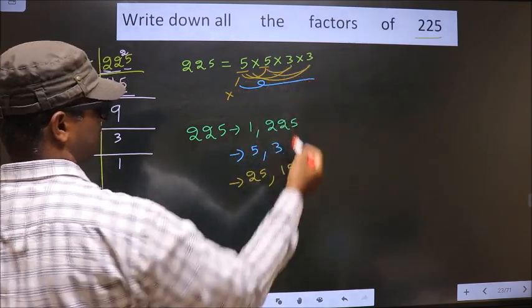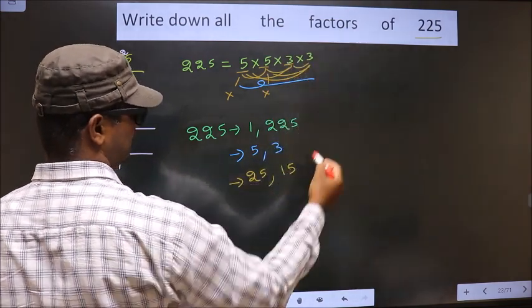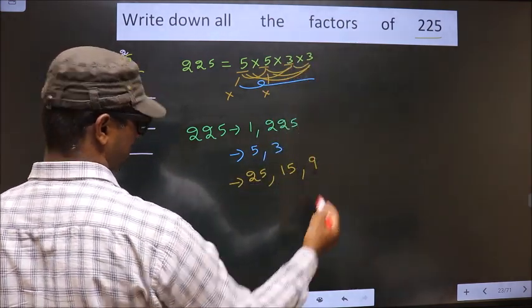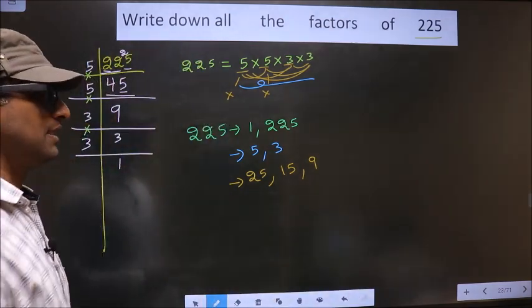Still, we get 15 itself. So, now you leave this, take this 3, combine with the 3, we get 9. So, no more combinations possible.